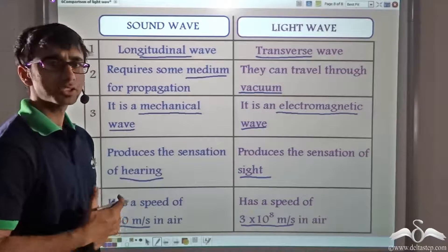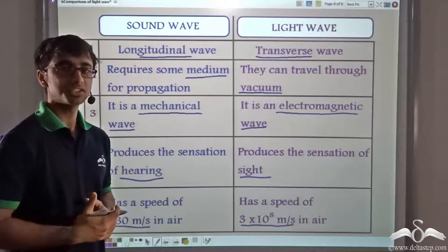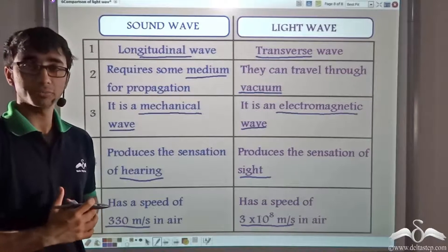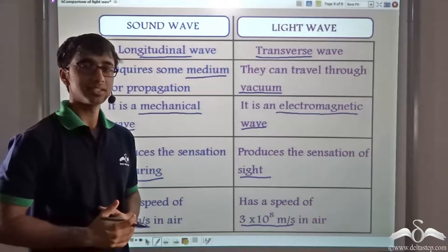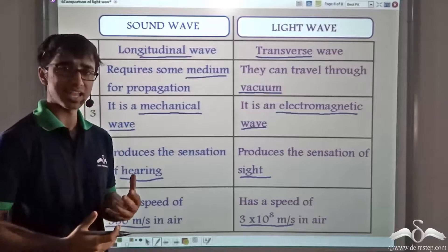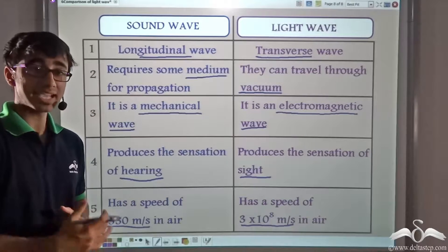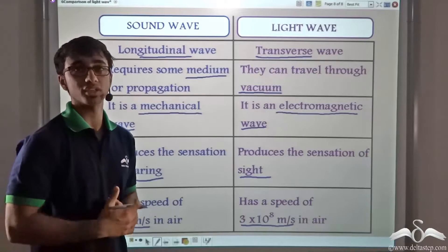So let us take a quick recap of what we learnt. We learnt that light travels faster than sound. The speed of light in air is 3 into 10 to the power 8 meters per second. Whereas the speed of sound in air is 330 meters per second. How much fast is light as compared to sound? Well, light is 9 lakh 9090 times faster than the speed of sound.